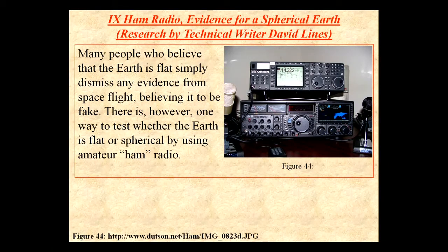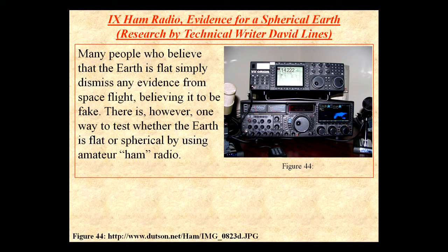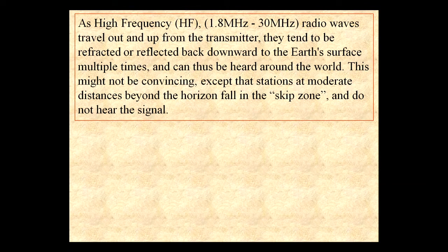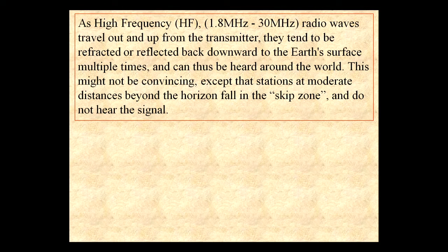Many people who believe that the earth is flat simply dismiss any evidence from space flight, believing it to be fake. There is, however, one way to test whether the earth is flat or spherical by using amateur ham radio. As high-frequency HF radio waves — 1.8 MHz to 30 MHz — travel out and up from the transmitter, they tend to be refracted or reflected back downward to the earth's surface multiple times and can thus be heard around the world.